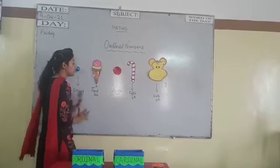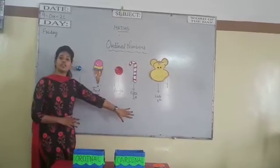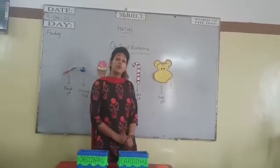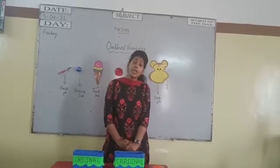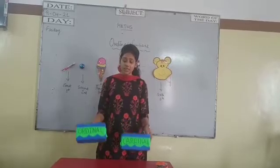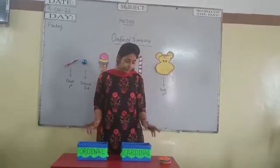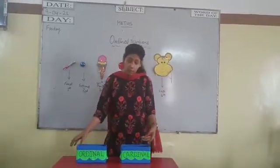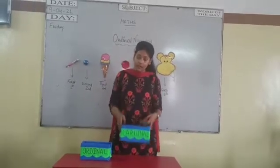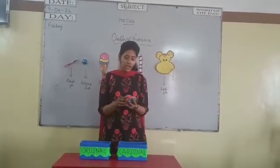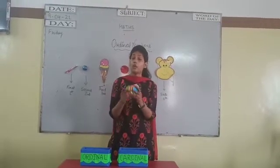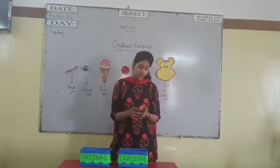So, the position of different objects are called ordinal numbers. Now I am going to explain ordinal numbers and cardinal numbers with the help of one activity. I have two boxes — one is ordinal and one is cardinal — and I have different numbers. Some are ordinal and some are cardinal.